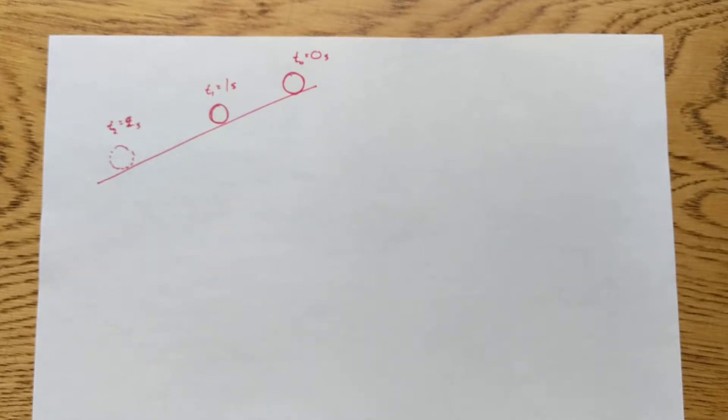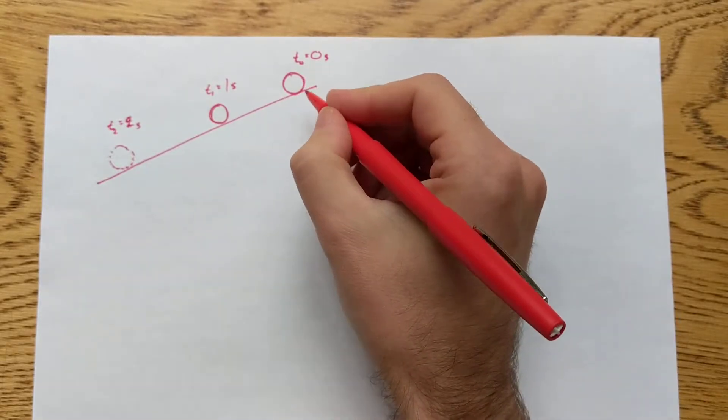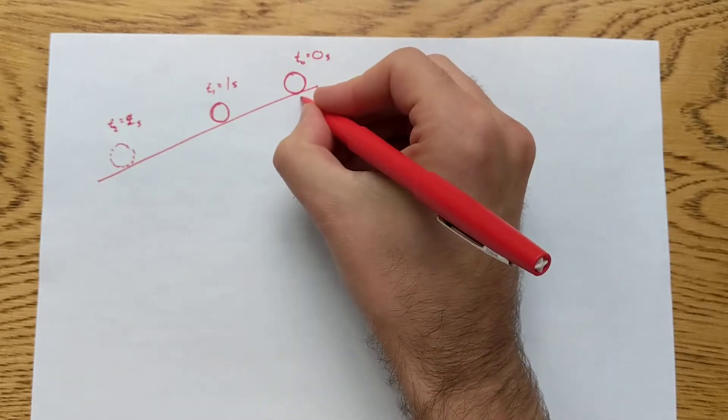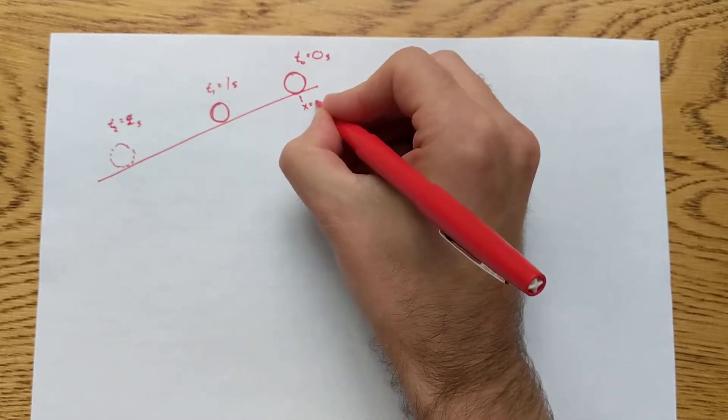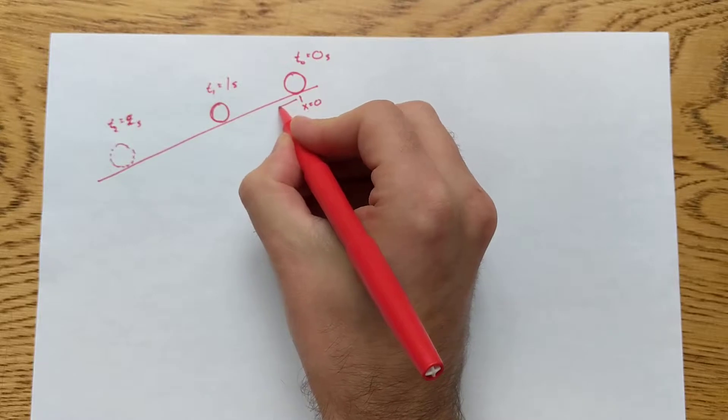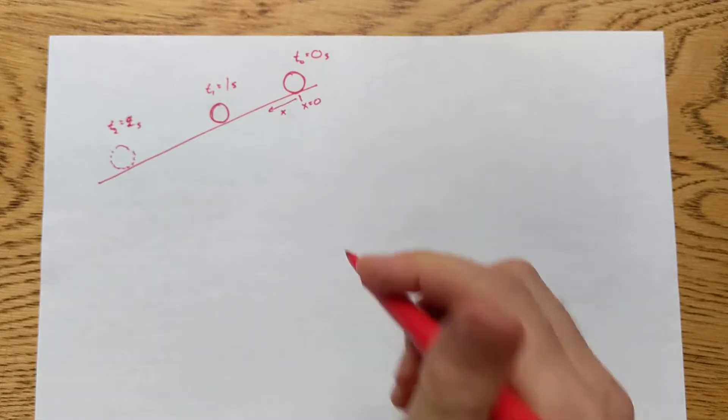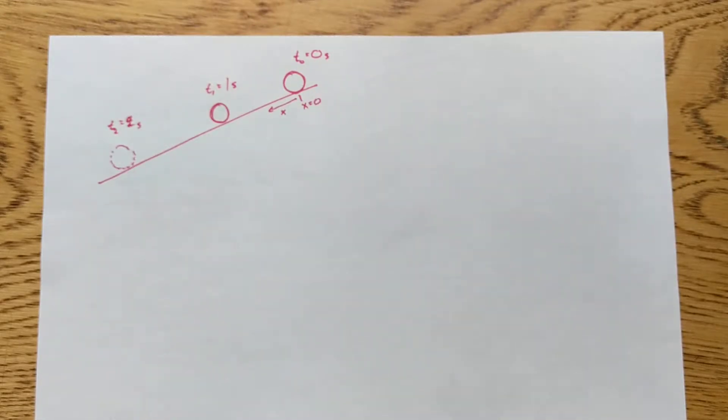Now I also need to choose a coordinate system here. Well, the ball starts from rest. What if I just call that X equals zero? And then I'll have increasing X along here. I can choose X however I want to, and you'll gain intuition about good choices the more problems you do.